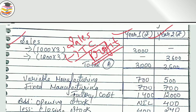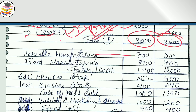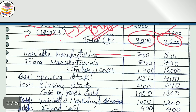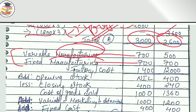In year 1 we sold 1,000 units, and in year 2 we sold 1,200 units. The variable manufacturing cost is Rs. 700 and Rs. 500 respectively. Fixed manufacturing is Rs. 300. When you add variable manufacturing plus fixed manufacturing, your factory cost comes out to Rs. 300 per the allocation. You have to remember that.